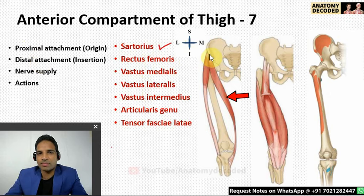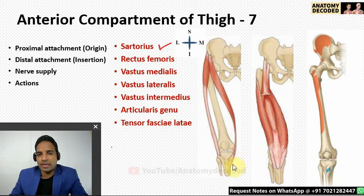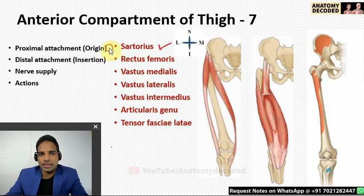For sartorius, the proximal attachment is from the anterior superior iliac spine on the hip bone. The distal attachment is along the upper medial aspect of the tibia. Two other muscles also attach there: gracilis and semi-tendinosus. These three muscles together attach along the upper medial aspect of the tibia.